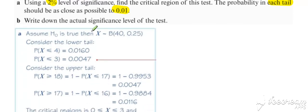So set our binomial up. If we look at the lower tail end first, we're looking for probabilities as close to 0.01 as possible. A little bit of trial and improvement on our calculator takes us to 3 and 4.